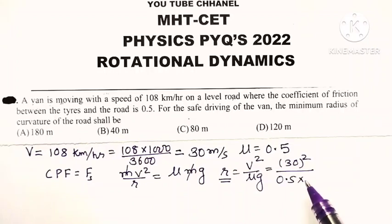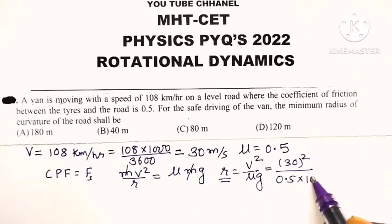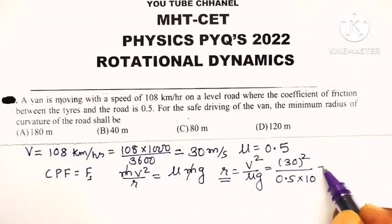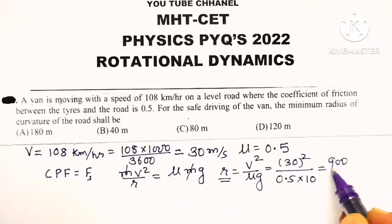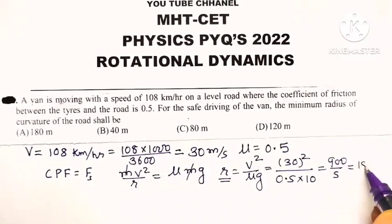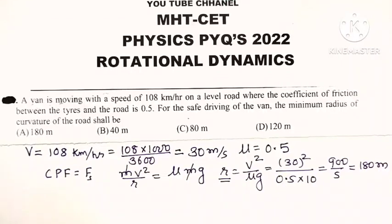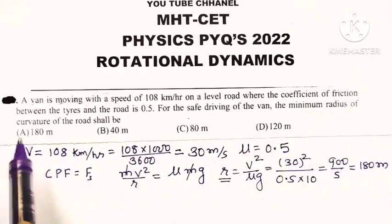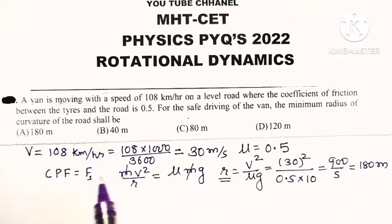900 divided by 5 equals 180 meters. So the minimum radius of curvature of the road for safe driving is 180 meters.